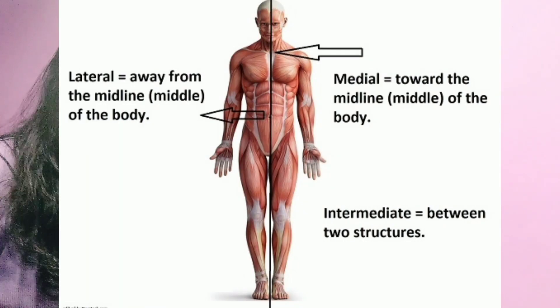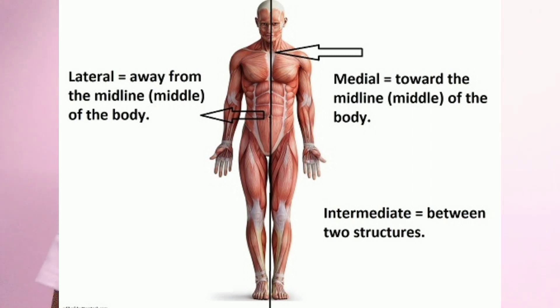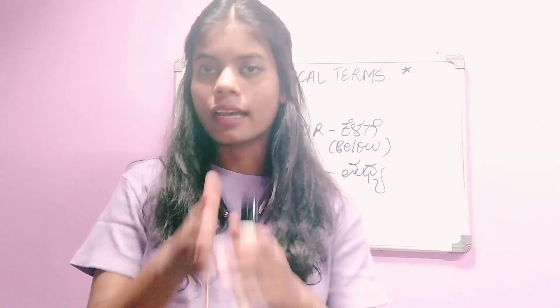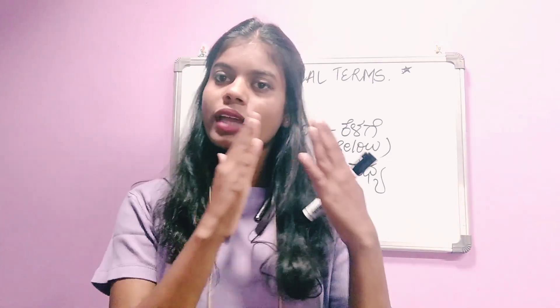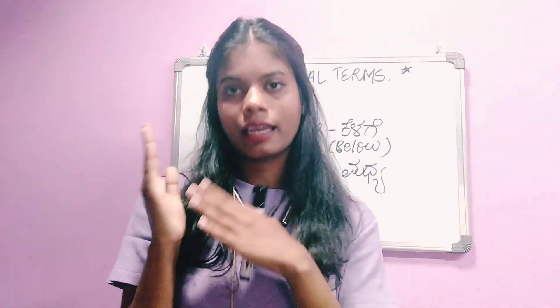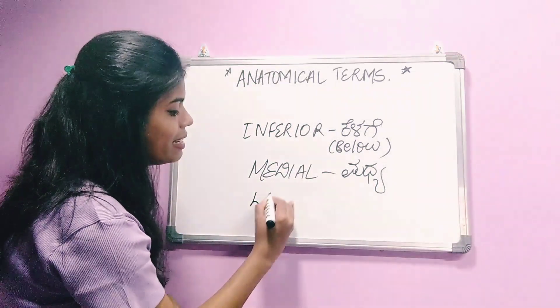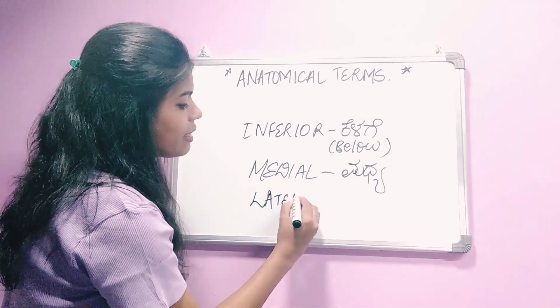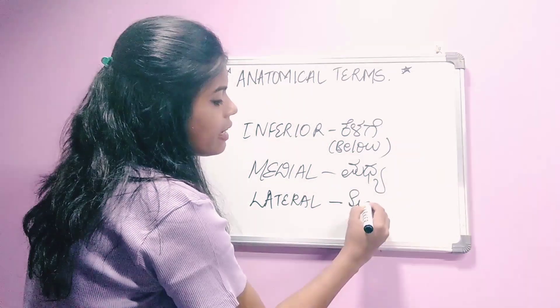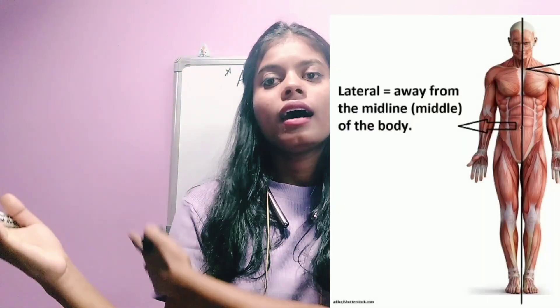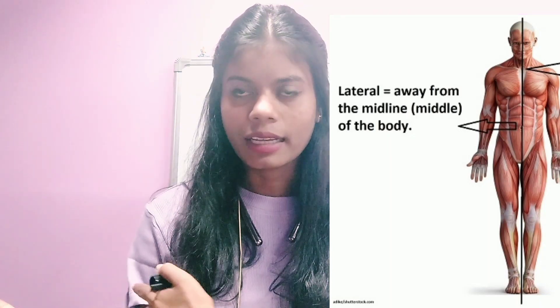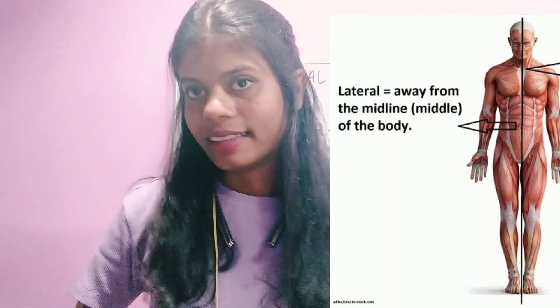Next word is medial. Medial refers to the middle. For example, my arm toward the middle of the body. The opposite is lateral — lateral means toward the side, away from the midline. So medial means toward the middle, and lateral means toward the side.